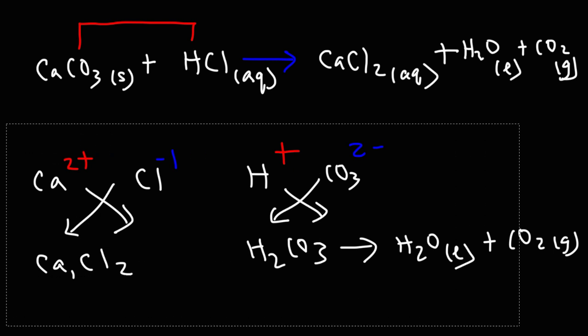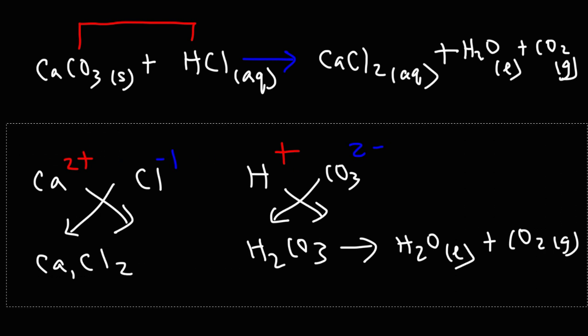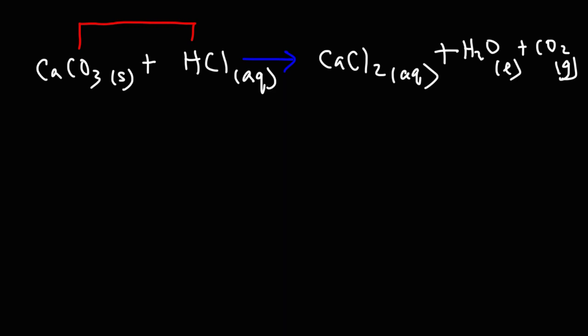Now the reaction is already balanced. We have one calcium. Actually, no it's not. I take it back. We need to put a 2 in front of HCl. Once we do that, then it will be balanced. Because we have one carbon atom, 2 hydrogen atoms on both sides, 2 chlorine atoms on both sides, and 1 calcium atom on both sides.